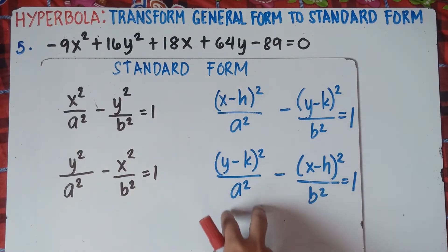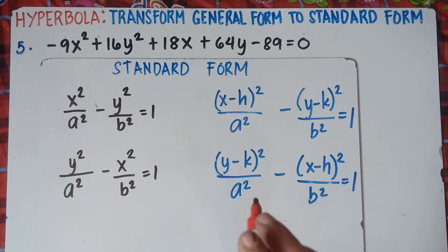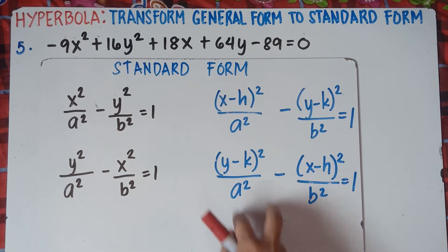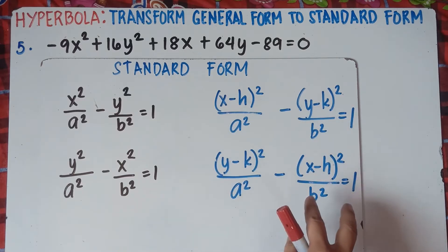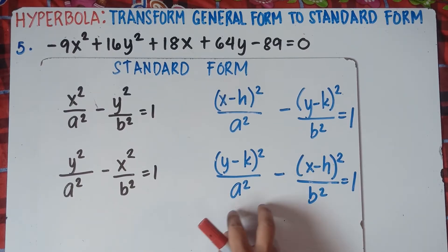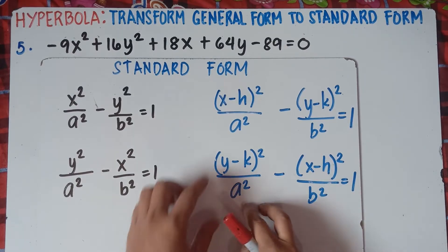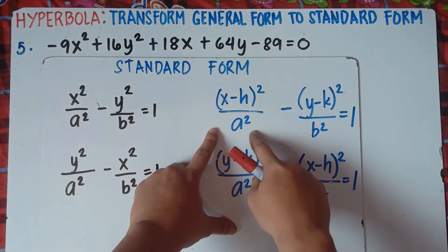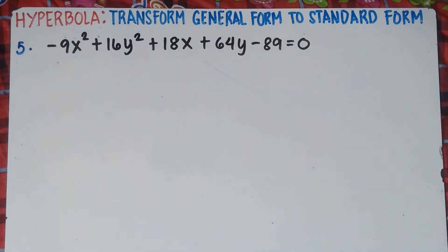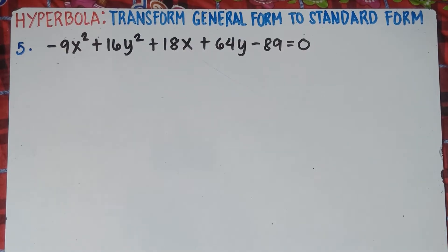Always remember that in a hyperbola, the positive quadratic term comes first before the negative quadratic term. A quadratic term is a number together with a variable with an exponent of 2. It should always come first before the negative quadratic term. And your 'a' is always on the left side of the equation — left side of x squared and y squared. So let's start answering number 5. Always remember that the positive quadratic term always comes first before the negative quadratic term when transforming to standard form.